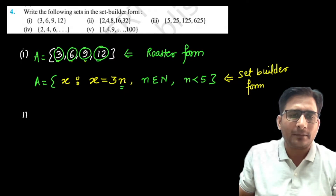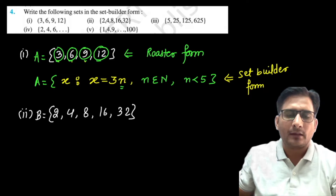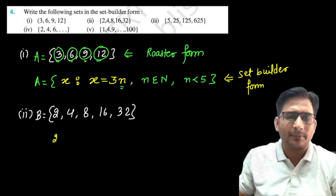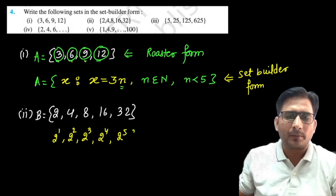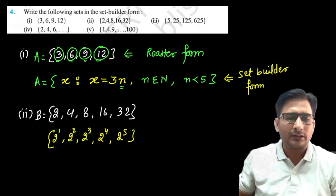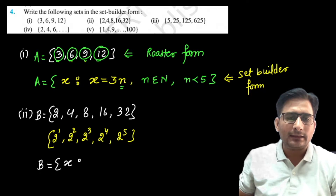Now look at the second part. Set B = {2, 4, 8, 16, 32}. This is given in roster form and we have to write it in set builder form. The pattern here is: 2¹, 2², 2³, 2⁴, 2⁵. In set builder form we start with curly brackets, write x, then semicolon, then define x.